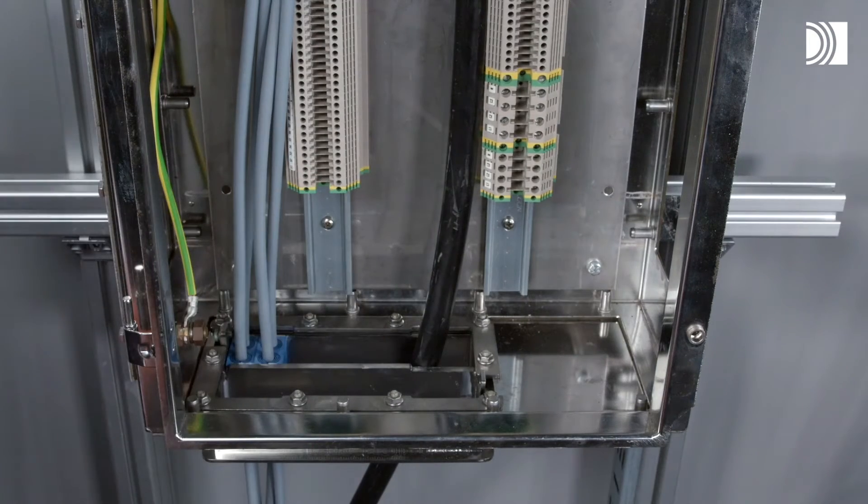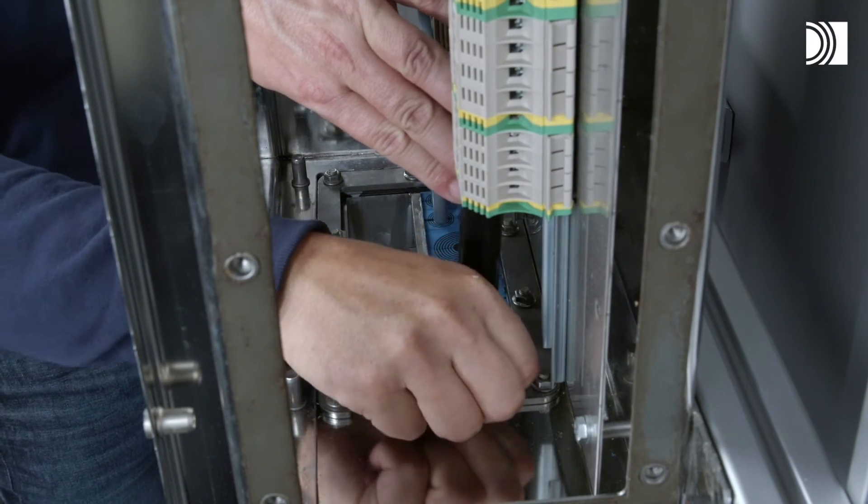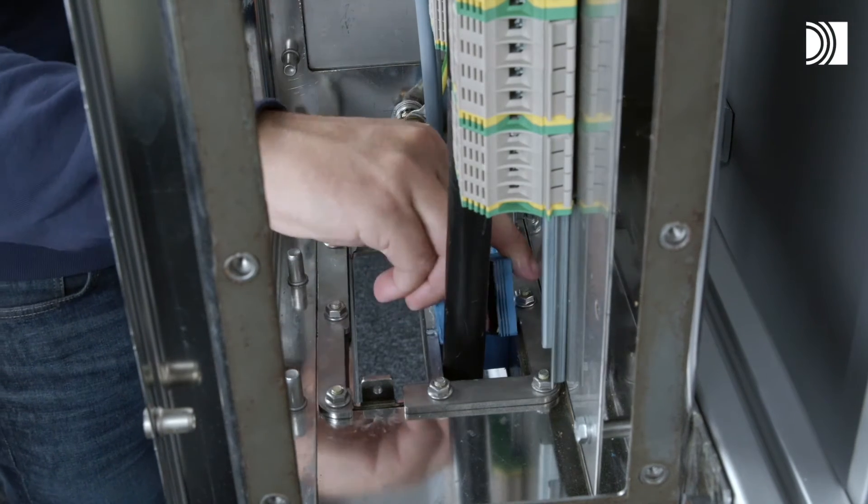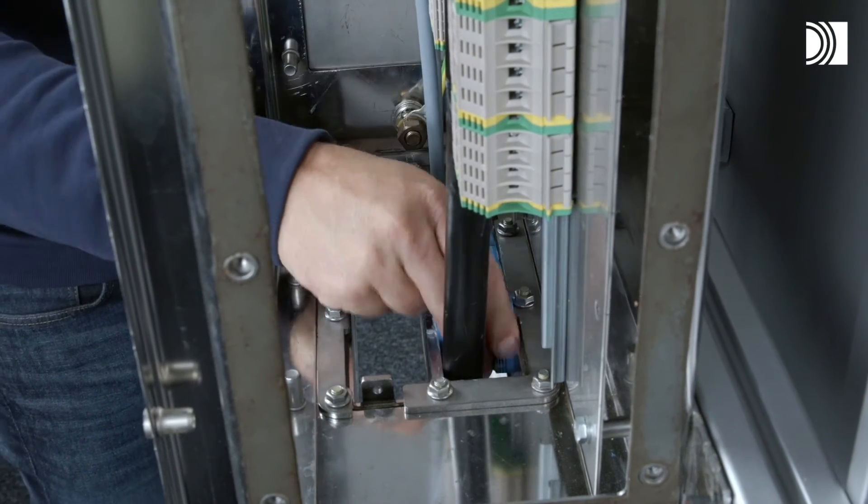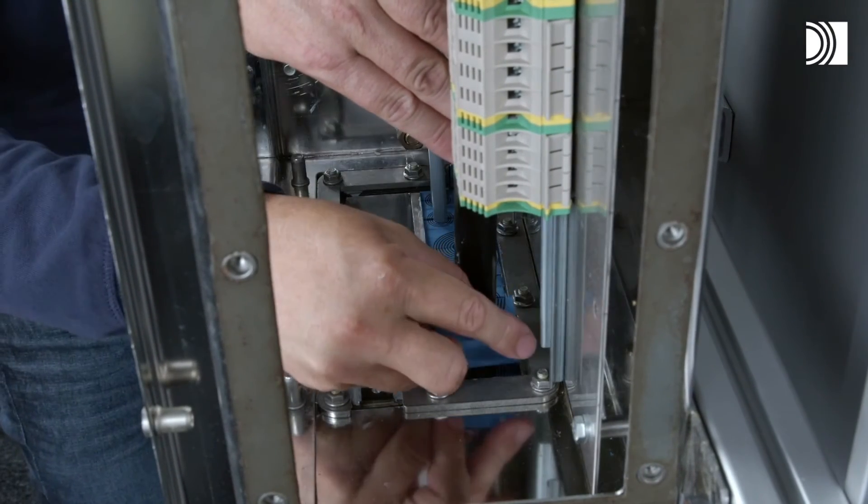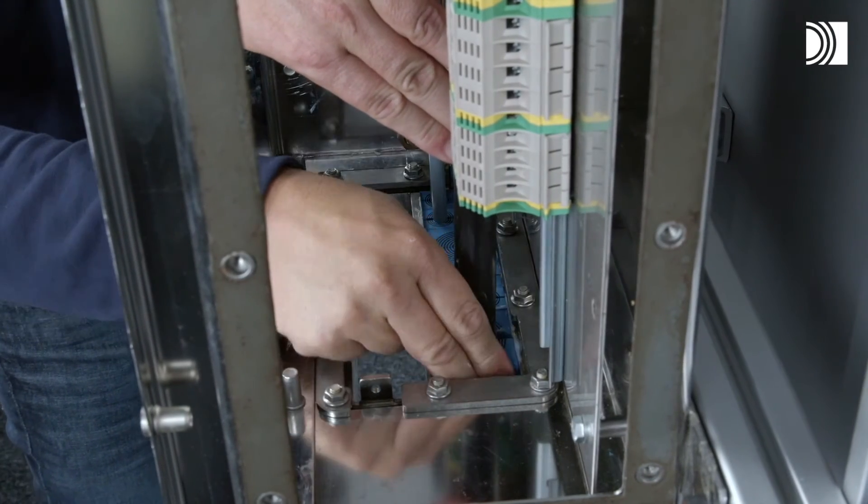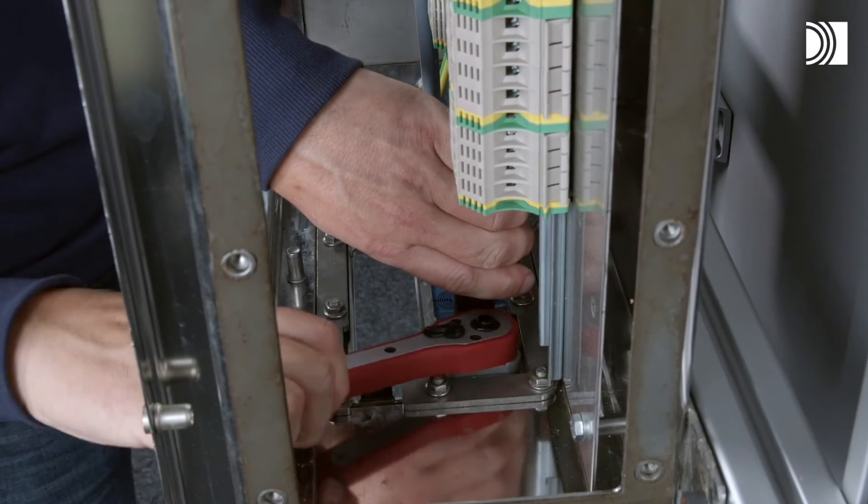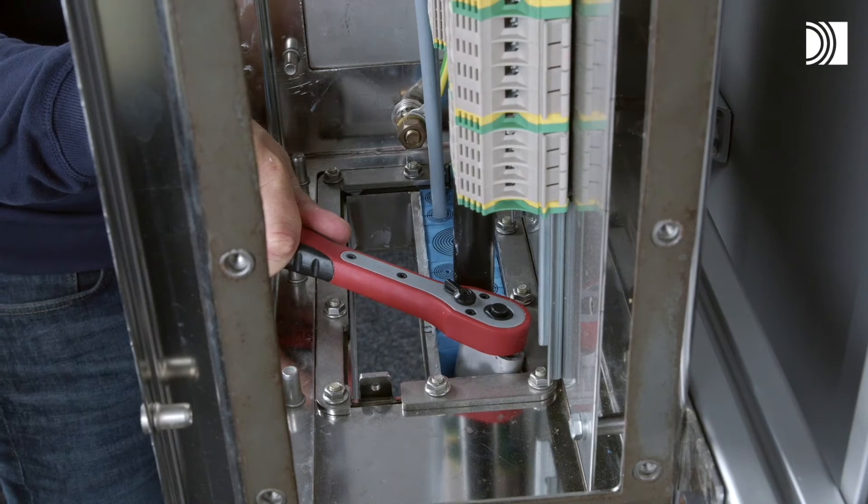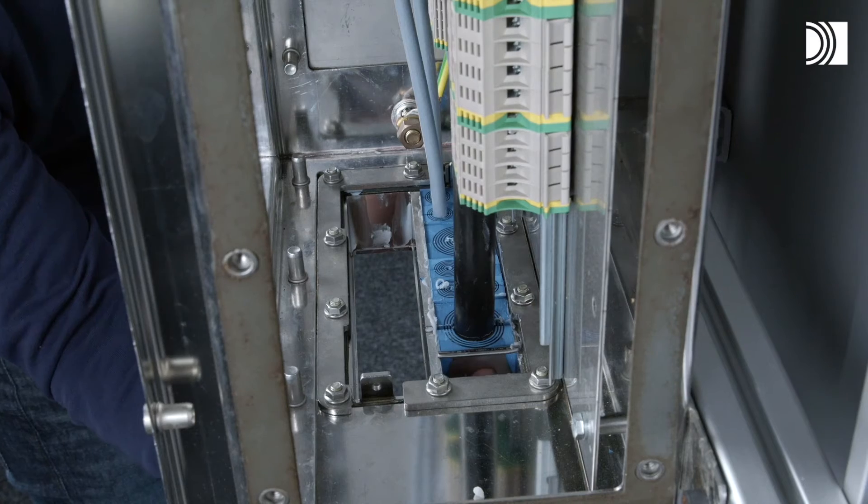Before inserting the final module, insert a stay plate. Use a Roxtec pre-compression tool to make space for the compression units if required. Drop the stay plate on top of the last module before tightening the seal.